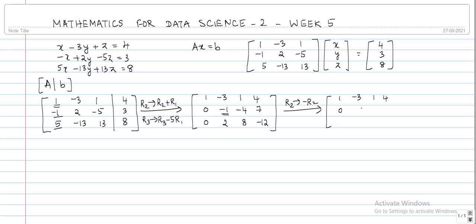And the last row we can in fact divide the last row by 2. It is not necessary but we can do that. It does not create any problem. So 0, 1, 4, and then minus 6.